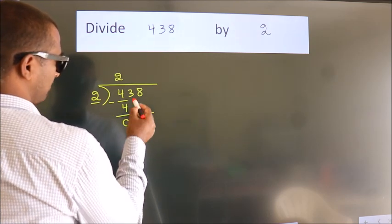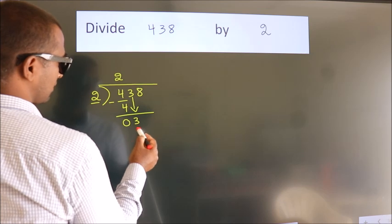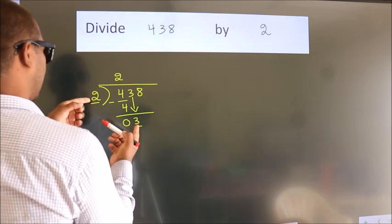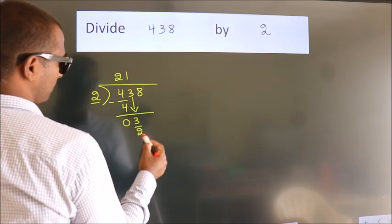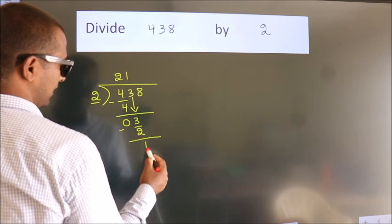After this, bring down the beside number, so 3 down. A number close to 3 in 2 table is 2 1s, 2. Now we subtract, we get 1.